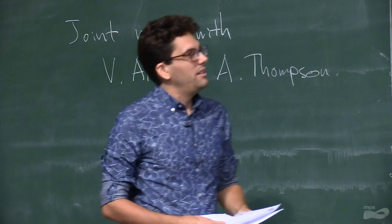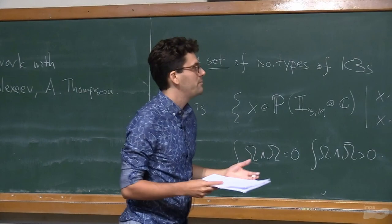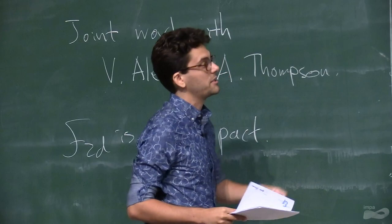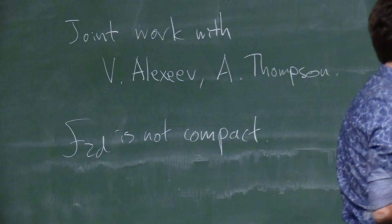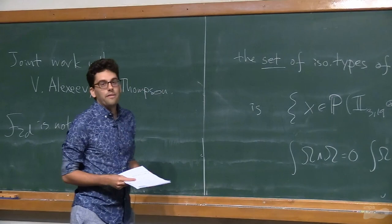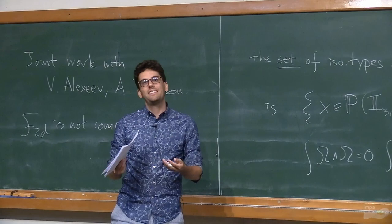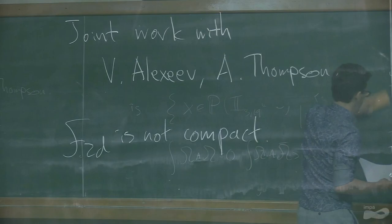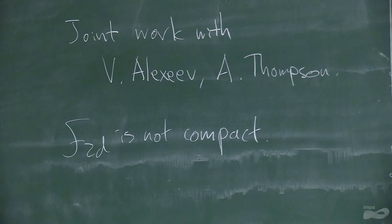We have this nice moduli space of polarized K3 surfaces of any given degree, but it's not compact. F_{2D} is not compact — there are cusps of the action of Γ on this symmetric space. That presents a problem because if you want to do intersection theory on the moduli space, you need a compact moduli space to make sure intersections don't run off to infinity. For curves there's the Deligne-Mumford compactification, and one gets a lot of mileage from a nice compactification whose boundary points represent something reasonable.